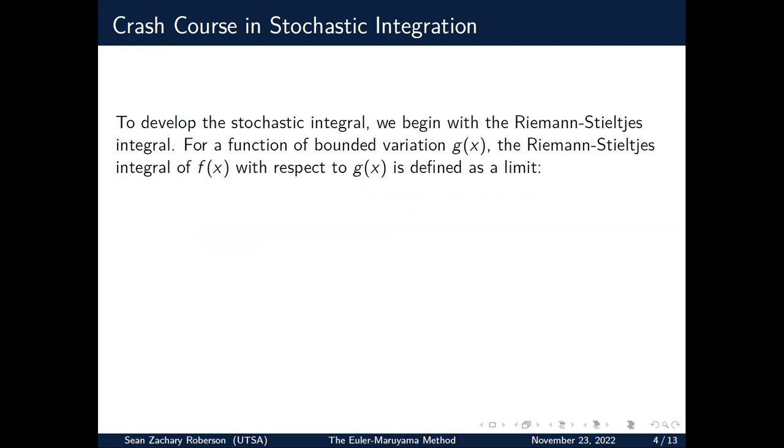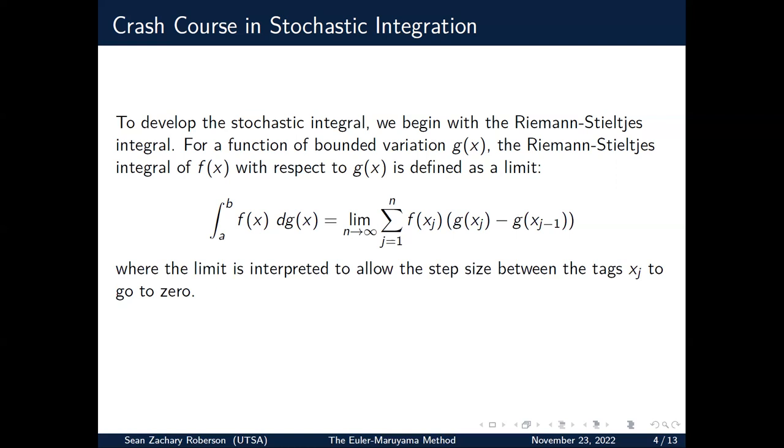So in order to develop this stochastic integral, we have to begin with some sort of framework and the framework that most texts usually begin with is the Riemann-Stieltjes integral. So from analysis, we have that a function of bounded variation g where the jumps are controlled. If we want to look at the integral of f with respect to g, we can define that as a limit in the usual sense,